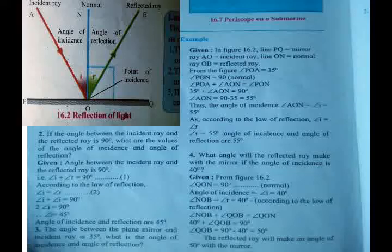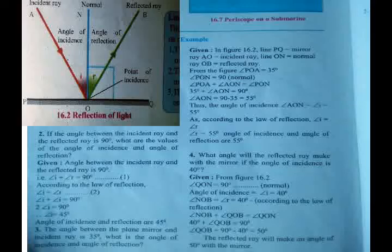Angle POA equals 35 degrees. Angle AON is the angle of incidence. Angle PON is 90 degrees, since the normal is perpendicular to the mirror. Angle PON equals angle POA plus angle AON equals 90 degrees. To find angle AON, that is the angle of incidence, subtract: 90 degrees minus 35 degrees equals 55 degrees. Thus, angle of incidence equals 55 degrees.